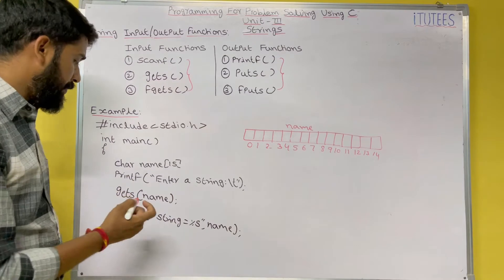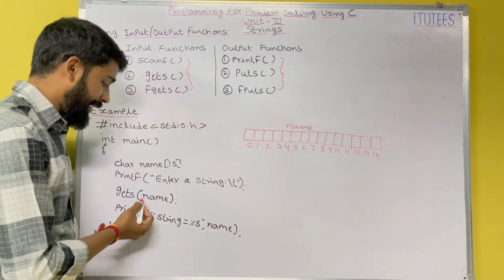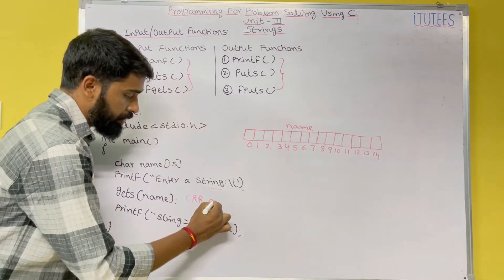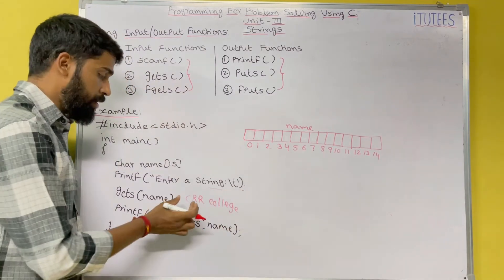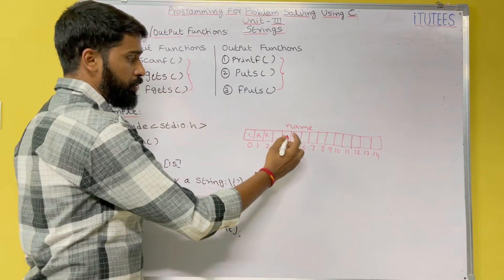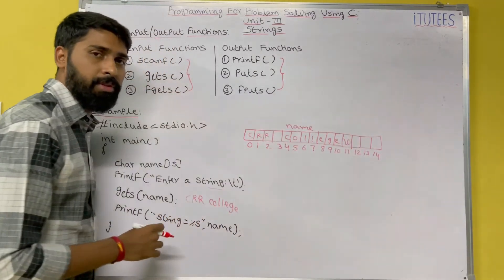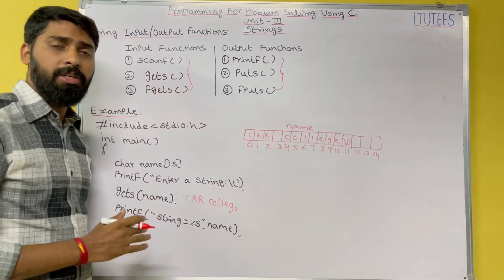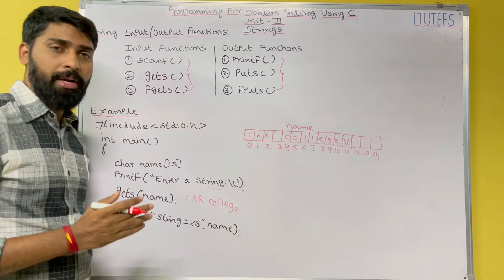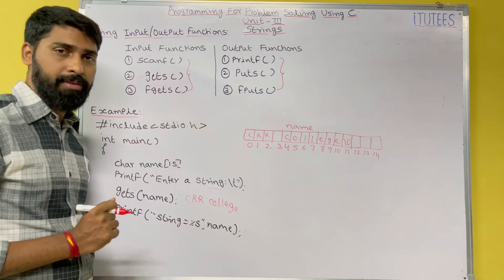Same program — printf 'enter a string', this message is displayed on the monitor. With gets(name), if I enter 'crr college', it stores the entire string including the space: c, r, r, space, c, o, l, l, e, g, e, and \0. That means gets reads input from the keyboard until it reaches a new line or end of file.